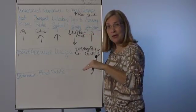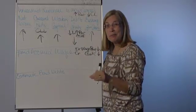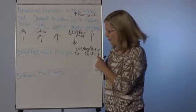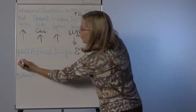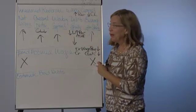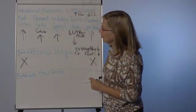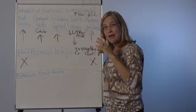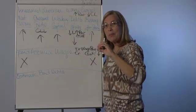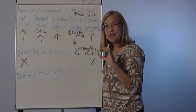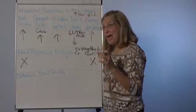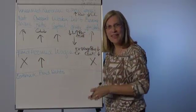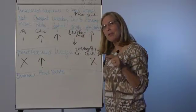So current assets and current liabilities are both going down the same amount. Well, notice that nothing here has to do with revenue or expense. So no impact on net income or earnings per share. When I look at the current ratio, when I have a numerator and a denominator going down by the same amount, remember the proportionality between the numerator and denominator change. And that means that the current ratio is going to increase. Isn't that amazing?